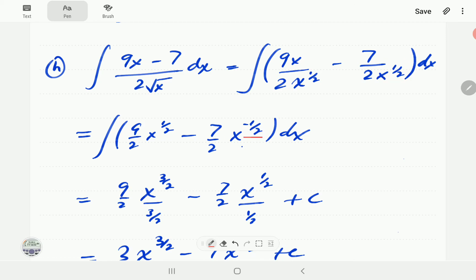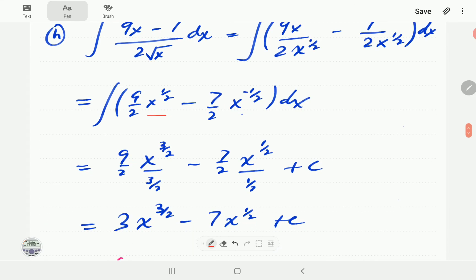Here we just take this x to the power half up and then we just integrate these as powers of x. So if we add one here get three halves divide by three halves, add one here get one half divide by one half.